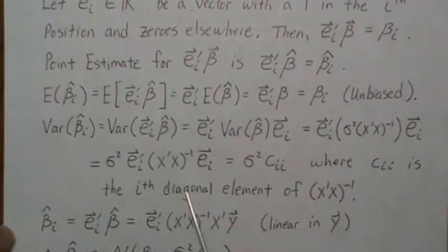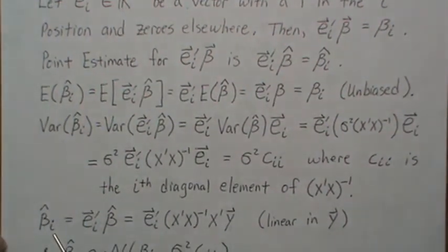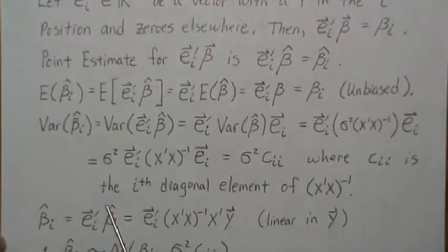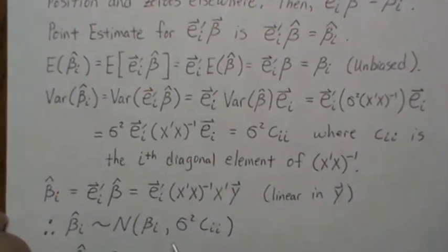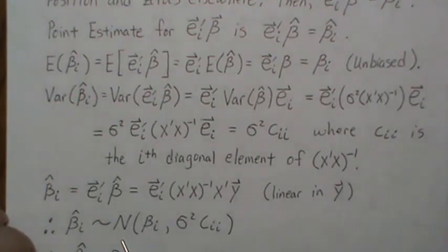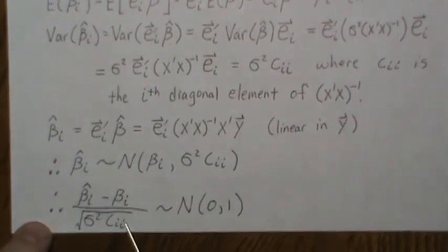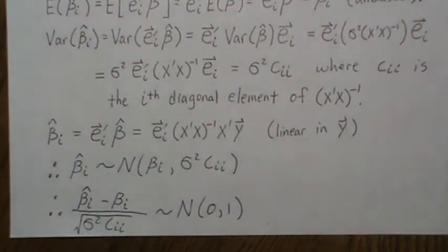Notice that beta_i hat, which is e_i transpose beta hat - but beta hat in matrix notation is clearly linear in the y's. That implies that beta_i hat is normal with mean beta_i and variance sigma squared c_ii. If we subtract the mean and divide by the standard deviation, we get a standard normal distribution, and then we might be able to use this for a test.